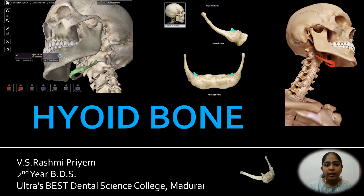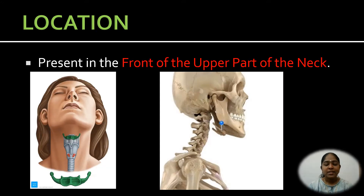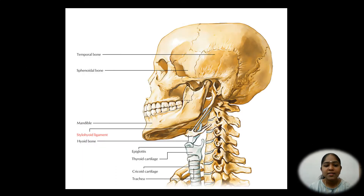Welcome to today's topic: the hyoid bone. The hyoid bone is a horseshoe-shaped bone. It is not a part of the skull, but considered with it for the sake of convenience. The hyoid bone is present in front of the upper part of the neck. It is not directly attached to any bone; instead, it is held by muscles and ligaments, the most important being the stylohyoid ligaments, which form the base of the skull.